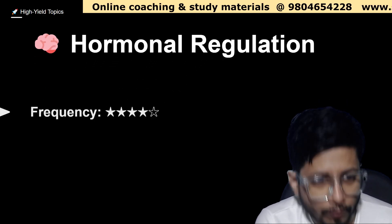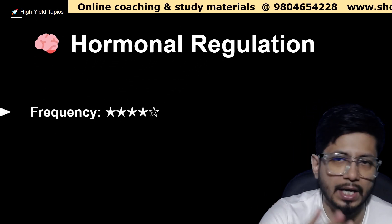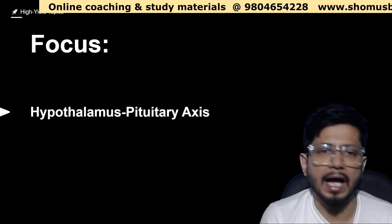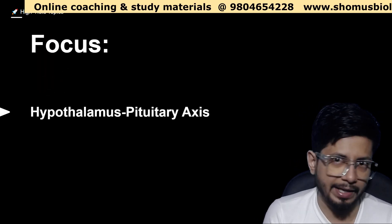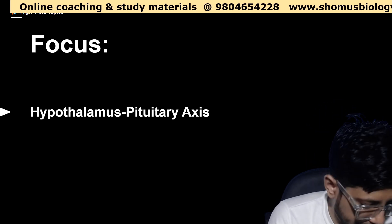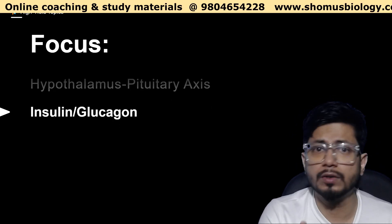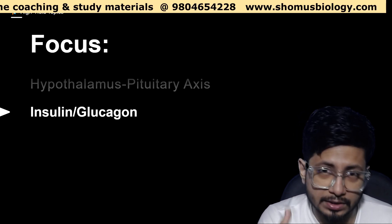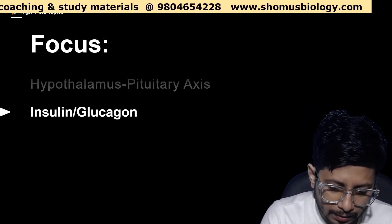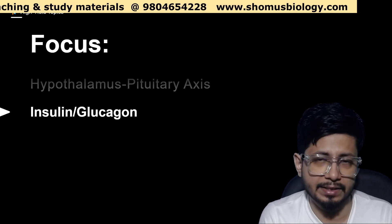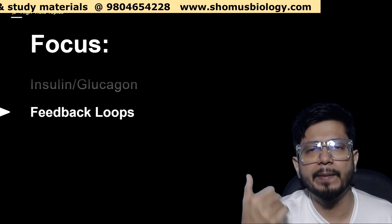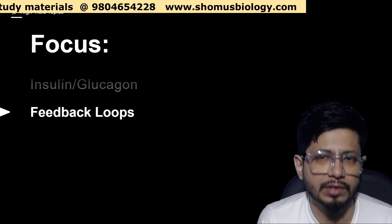Then we have hormonal regulation. The hormonal regulation frequency is 4 star out of 5. Now the focus of hormonal regulation here is the hypothalamus pituitary axis. The HPA hypothalamus pituitary axis is very important. Insulin and glucagon's role in the process of the regulation, the process of basically how exactly it regulates the glucose metabolism in the body, that is very important. Insulin and glucagon.